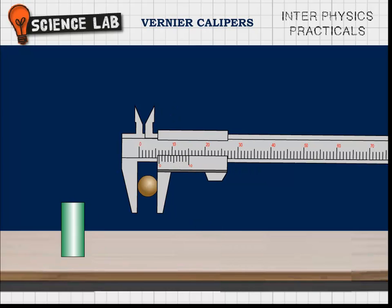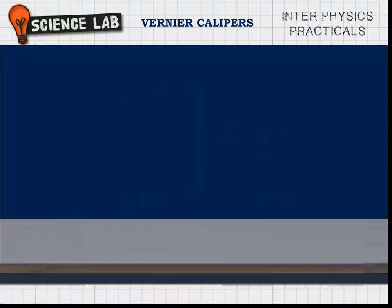The sphere is gripped between the jaws in such a way that the line joining the points where they touch the sphere passes through its center, and mean diameter is measured. If R is its radius, the volume of the sphere is calculated by V₁ = (4/3)πR³ centimeter cube.